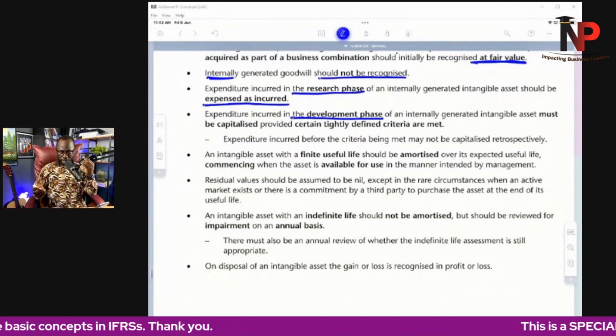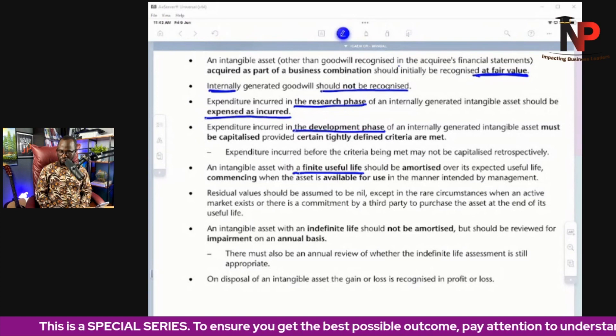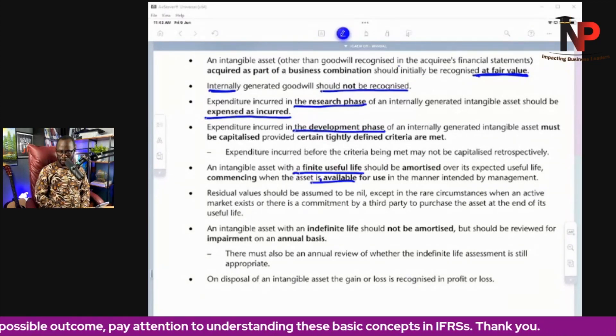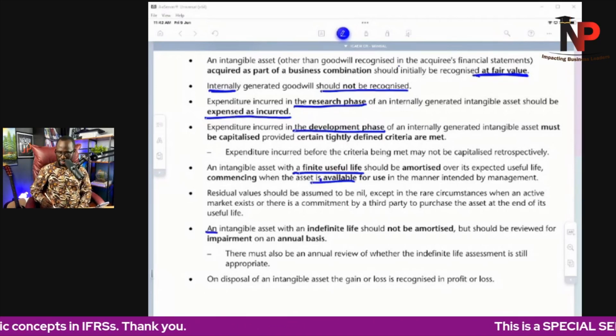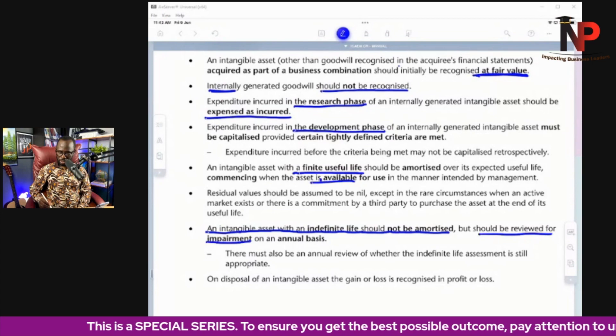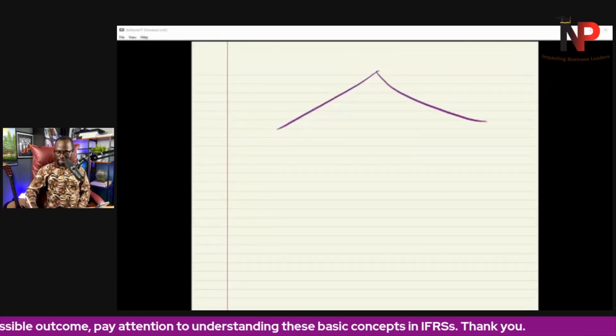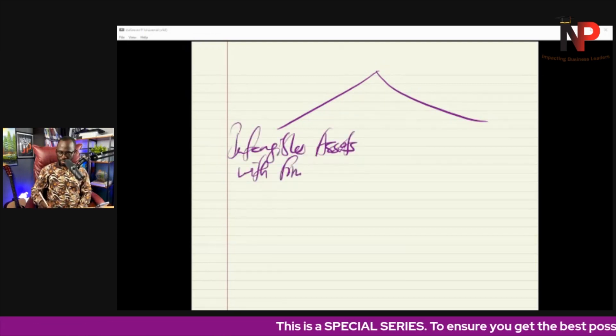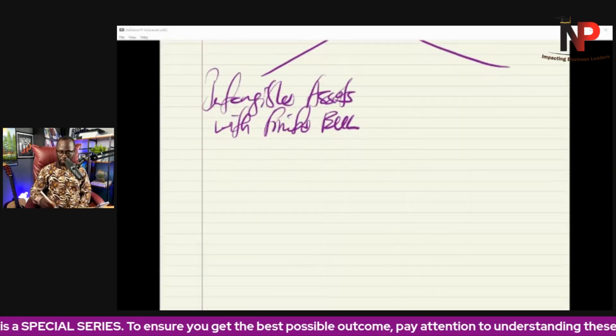So after that recognition, an intangible asset with a finite useful life should be amortized over its economic useful life, commencing when the asset is available for use in the manner intended by management. That relates to the last but one statement: an intangible asset with an infinite life should not be amortized but should be reviewed for impairment on an annual basis. So intangible assets can broadly be divided into two. And the type of intangible asset tells us how we account for it.